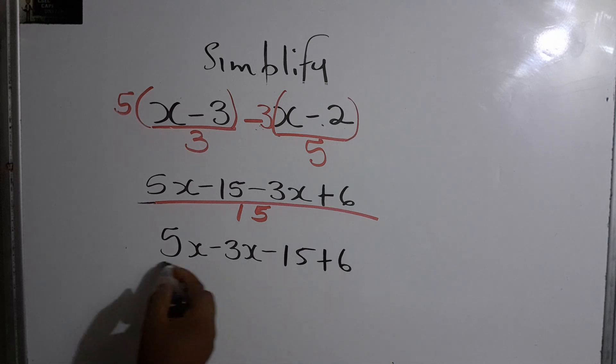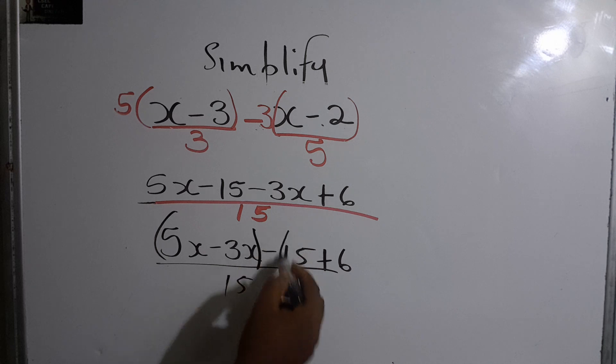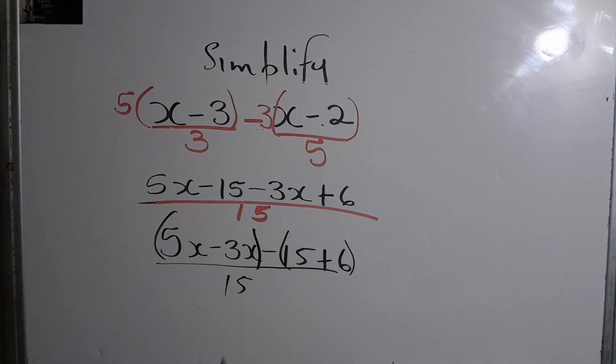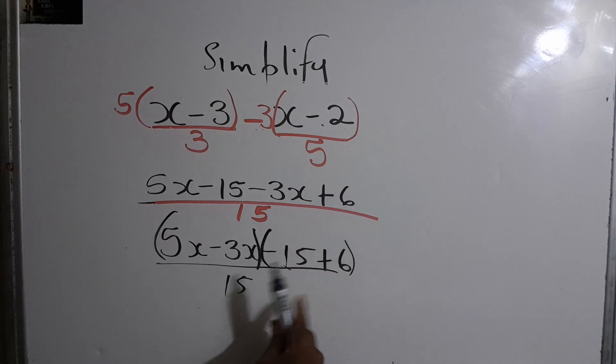All over 15. Now that we can simplify that, we have all the like terms together. This is not a bracket, so the minus basically must go in here. So we have 5x minus 3x, that will give us 2x.